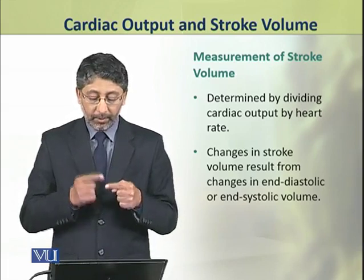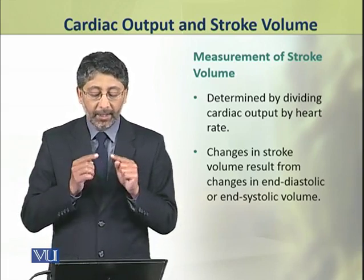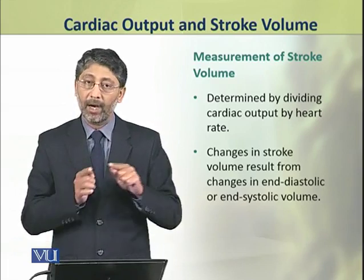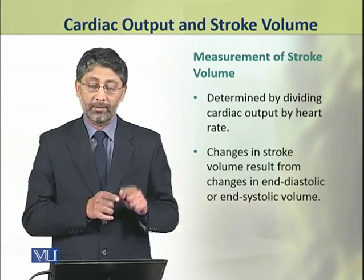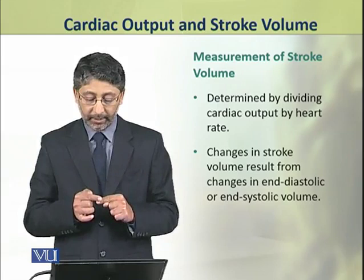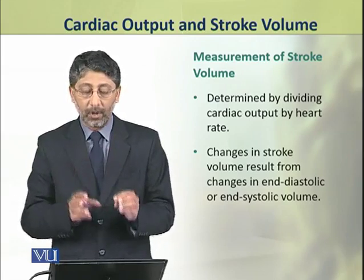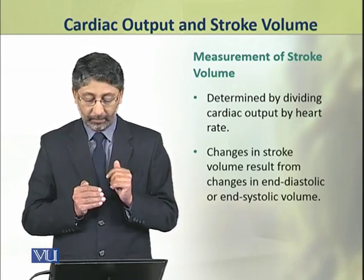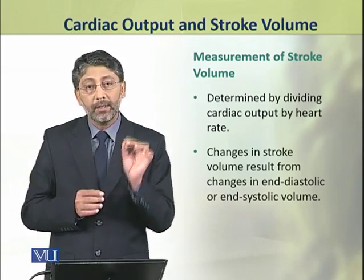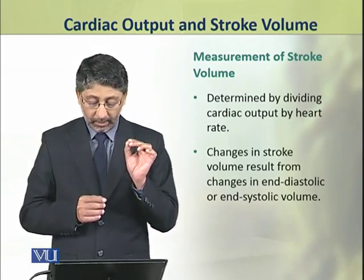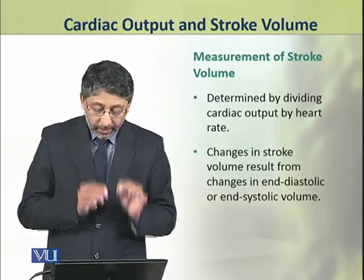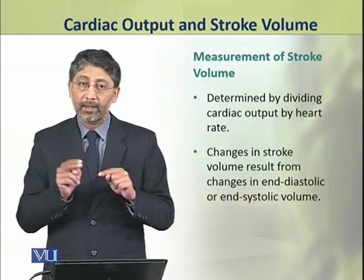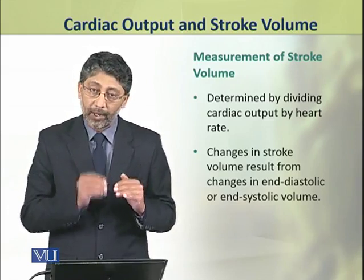The stroke volume is determined by dividing cardiac output by heart rate. Mathematically, we divide the cardiac output by heart rate. Changes in stroke volume result from changes in end diastolic or end systolic volume.